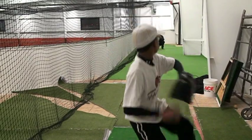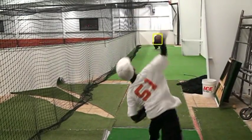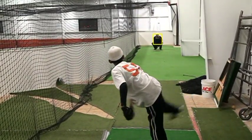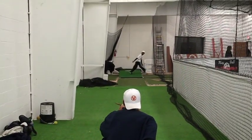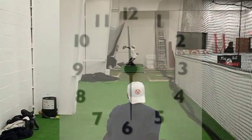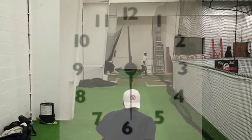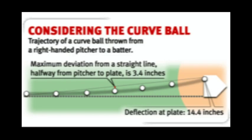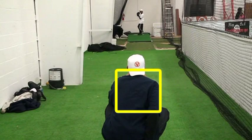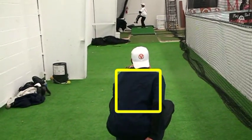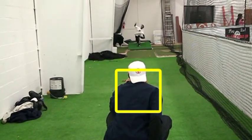And here goes the curveball in slow-mo. This pitch I threw is more of what I call a 12-6 curveball. A 12-6 curveball goes straight up and straight down. And since I am a right-handed pitcher, the curveball will start on the right and drop to the left. Like I said, it starts on the right and drops to the left.